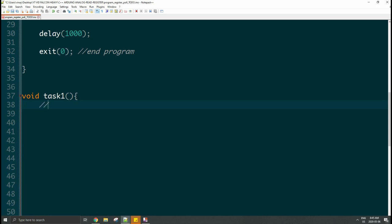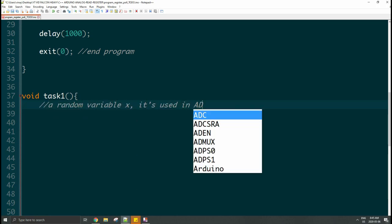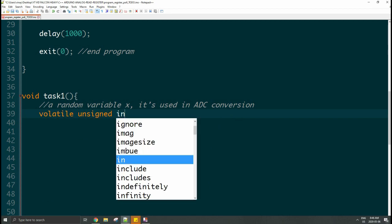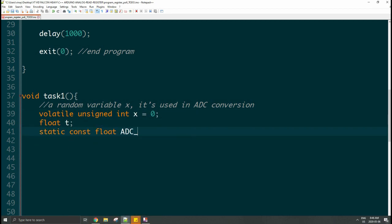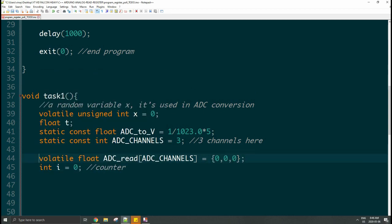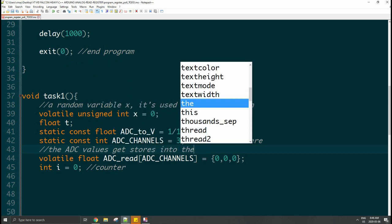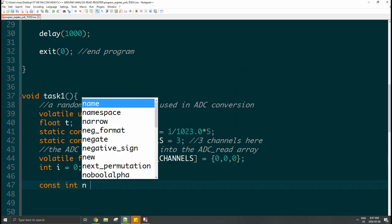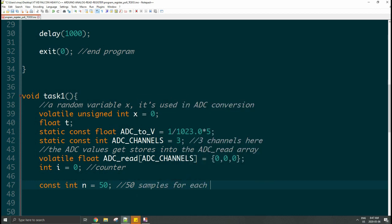Now in your task 1 function, this is where the analog to digital converter will go. First of all, we have just a random variable X. It will be used inside the conversion but we will not access it. Set the voltage constant converter. The number of channels we have is three channels here. Let's define an array which will store all the ADC values. Set a counter i = 0. Define the number of samples you want to measure, and then inverse that, so 1 / N for this case.